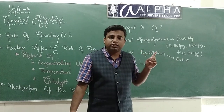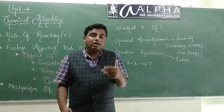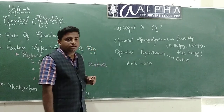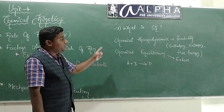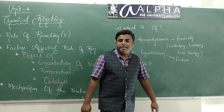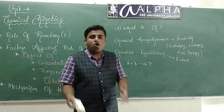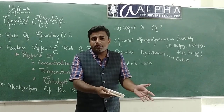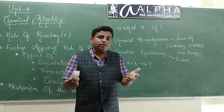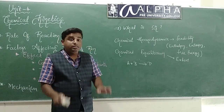Whether the reaction takes place in the forward direction or the backward direction, and whether the reaction attains equilibrium or not — all these things are explained by chemical equilibrium. To summarize: chemical thermodynamics explains the feasibility of the reaction, whether the reaction takes place or not. Chemical equilibrium explains the extent of the reaction — how much of reactants react to form how much of products, and whether the reaction attains equilibrium or not.